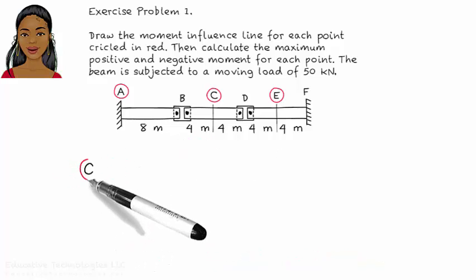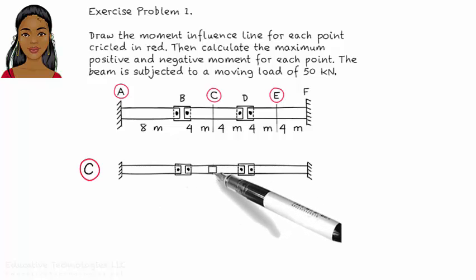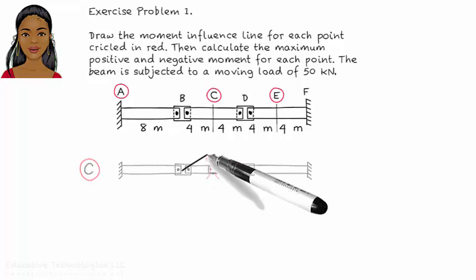Draw the moment influence line for point C. Place a hinge at C. Apply a positive moment to the hinge. Segment BC turns counterclockwise. Segment CD turns clockwise.